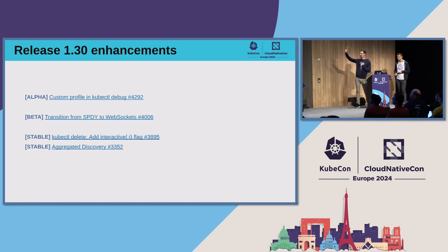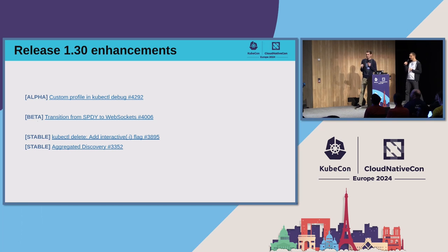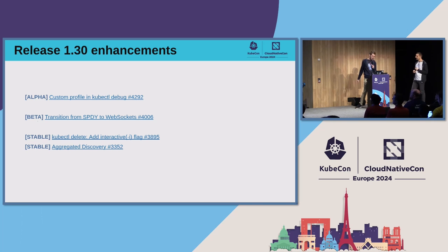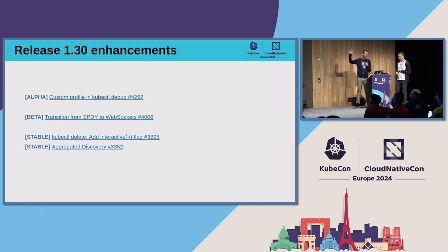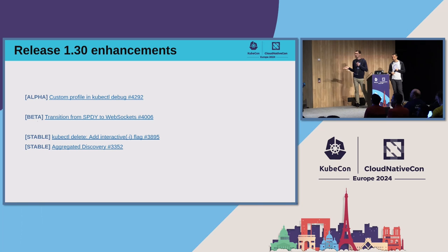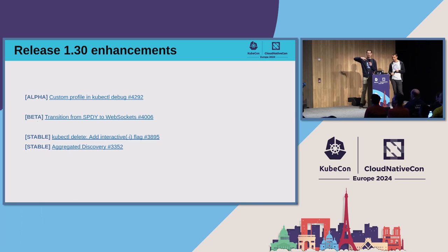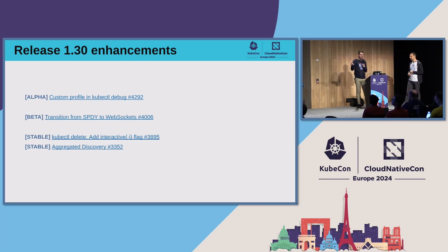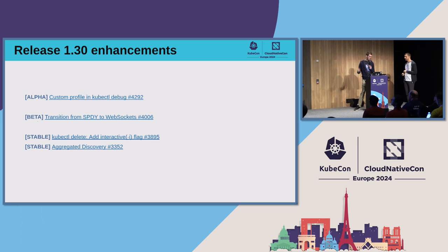1.30 — we're currently in beta zero. We are in the 1.30 release process right now, so you should see it in the next couple of weeks. We have some pretty cool features landing. In alpha we have custom profiles for kubectl debug. You can specify different resource profiles and seccomp profiles for your debug containers — it's a long-awaited feature, so get in there and play with it when 1.30 drops.